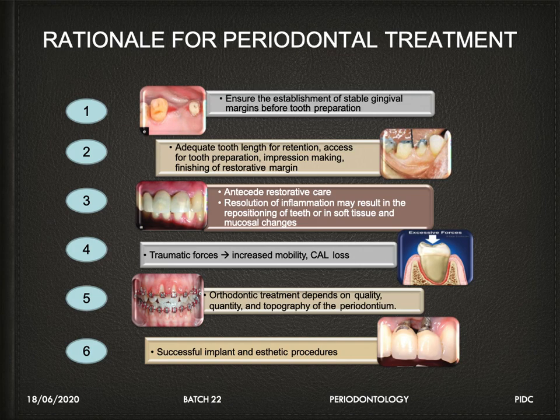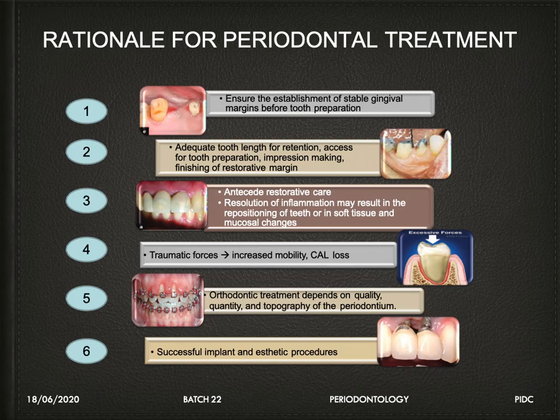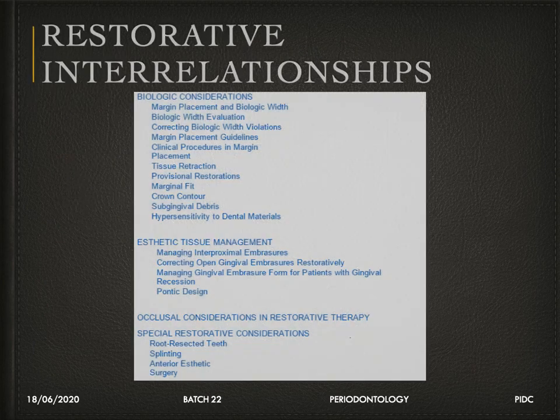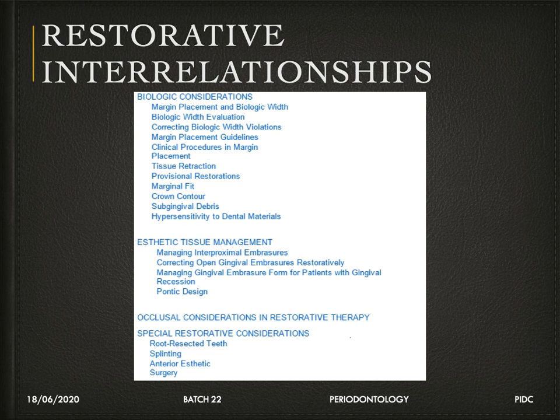We will look at the role of the periodontist in interdisciplinary dentistry — how periodontal therapy helps, and what treatments can be done at the interdisciplinary level. We will cover restorative, endodontic, orthodontic, and prosthodontic relationships. In restorative dentistry, the most important considerations are biological width, aesthetics, occlusal factors, and special restorative considerations.